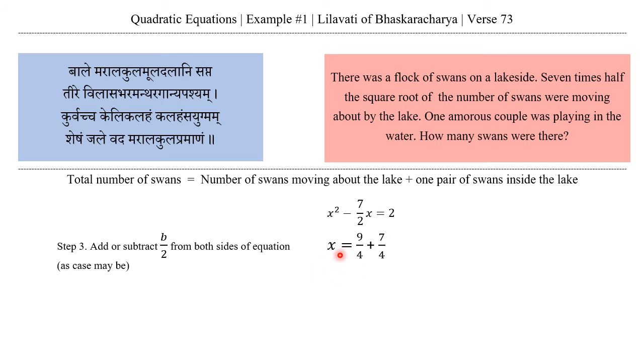We get x equals 9 upon 4 plus 7 upon 4, which can be written as x equals 16 upon 4, which is 4. Now we need to find x square, not x. The last and final step is to square this result to obtain x square. x square is 16. So we can conclude that there were 16 swans. Thank you.